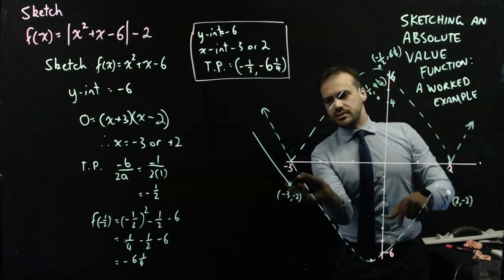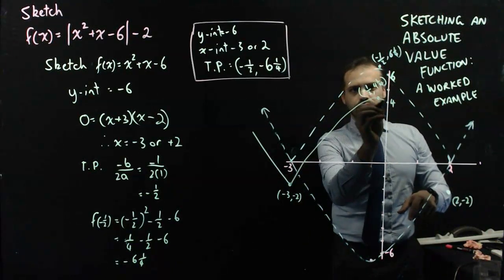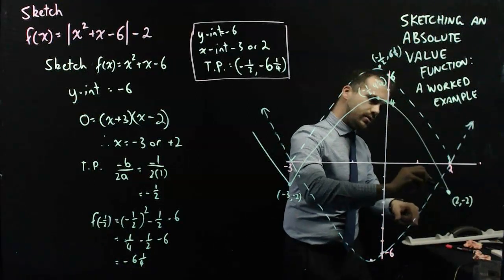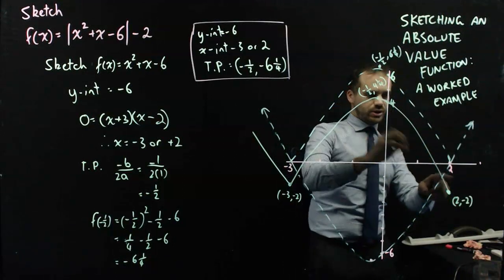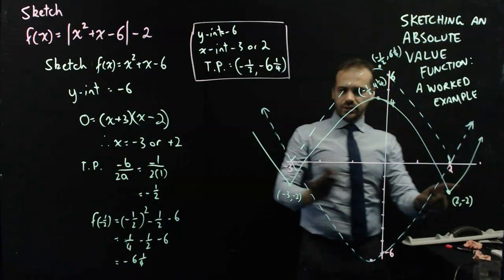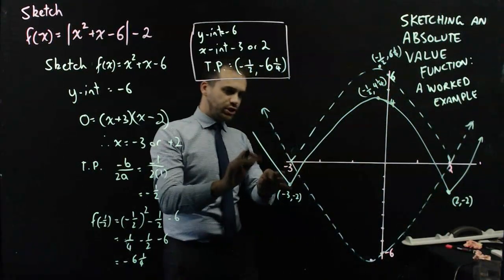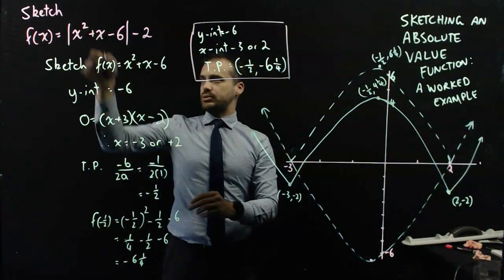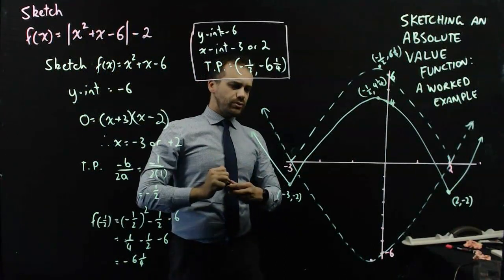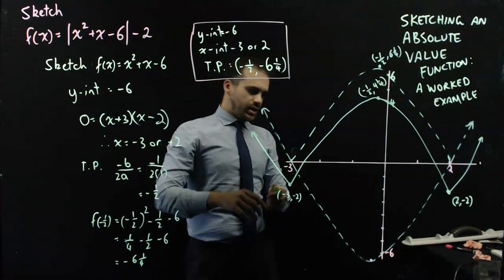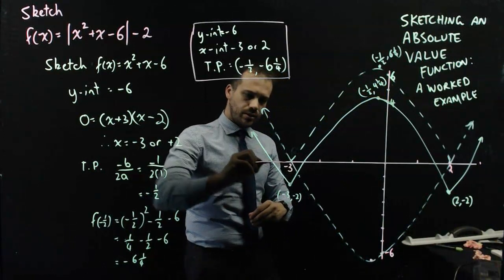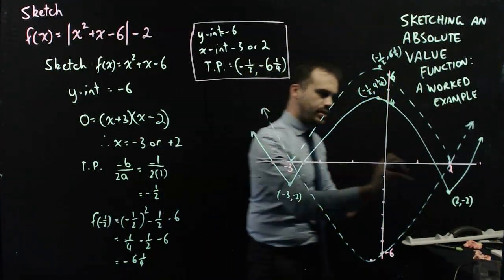That is the shape of the absolute value of x squared plus x minus 6 minus 2. Now, the thing that's really annoying me at this stage is that when we sketch functions we usually know what our x-intercepts are, and at the moment I don't. So I'm going to have to find my x-intercepts.